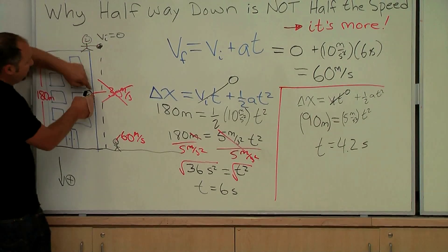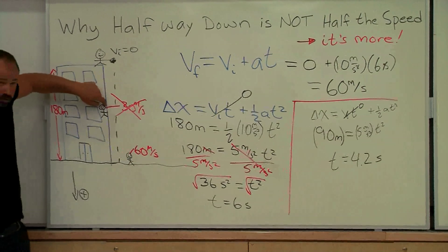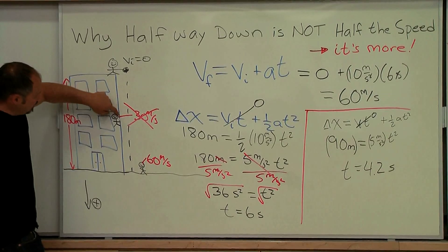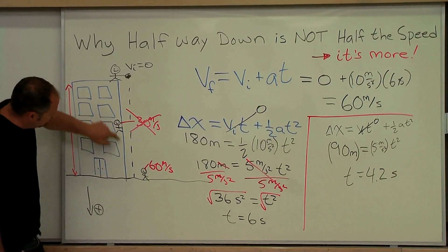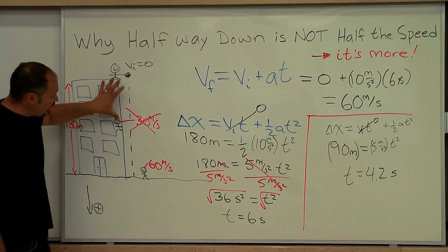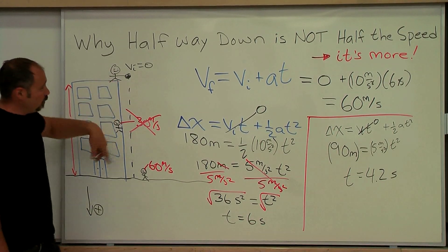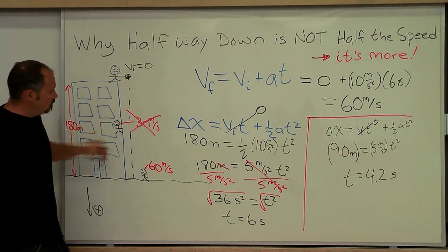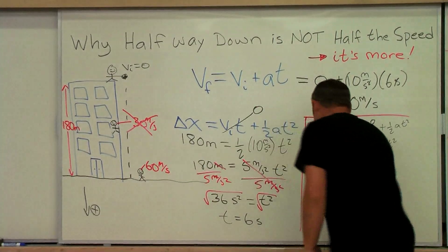It takes six seconds to come all the way down, but to get to the halfway point takes 4.2 seconds. It only takes a remaining 1.8 to go this distance. So it spends more time here and therefore has a larger speed at the halfway point.